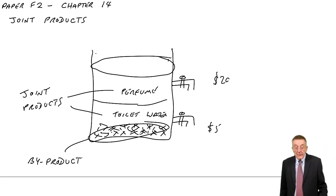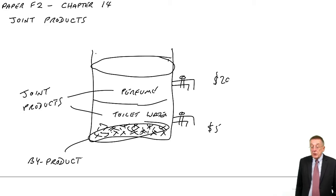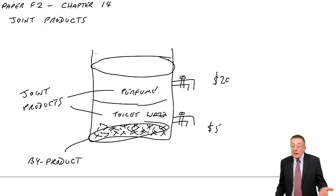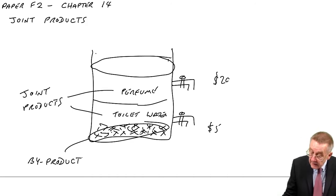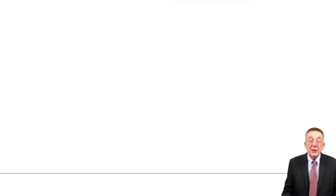Our job is to get a cost per litre or per bottle of perfume and toilet water. There are two standard approaches we could take. Please turn to example one, which is an example of what we call the physical units basis.